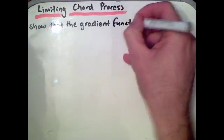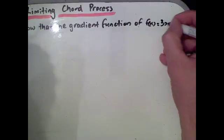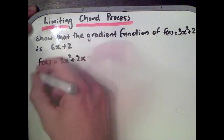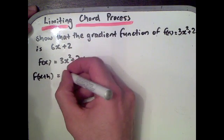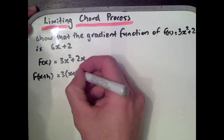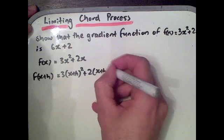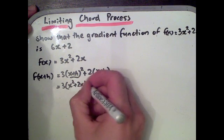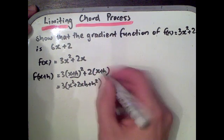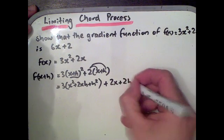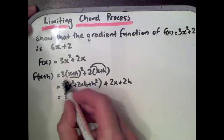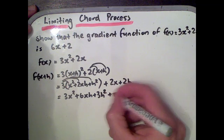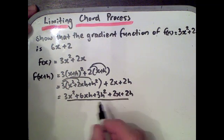Let's look at another question: show that the gradient function of f of x equals 3x squared plus 2x is 6x plus 2. Let's write down f of x and f of x plus h by replacing all x's with x plus h. Expanding out, we get x squared plus 2xh plus h squared plus 2 times x plus h, which gives 3x squared plus 6xh plus 3h squared plus 2x plus 2h. That is f of x plus h.